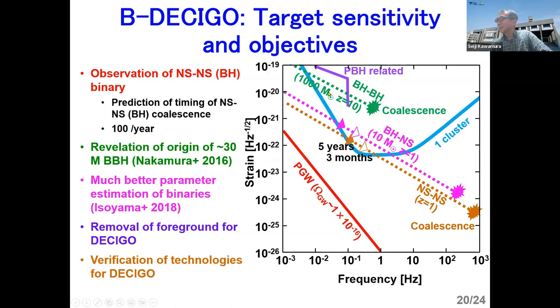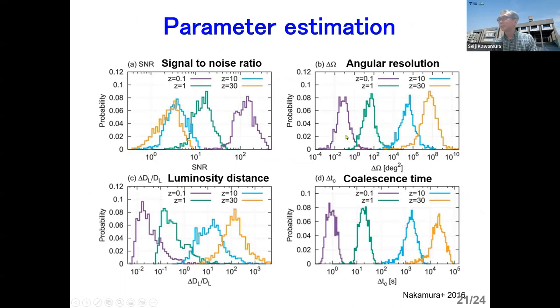So B-DECIGO target sensitivity is something like this. So of course, we cannot measure the PGW with B-DECIGO. But we can measure a lot of things. So observation of neutron star, neutron star binary, 100 times a year, which is pretty good. And the revelation of origin of 30 solar mass black hole binary. And much better parameter estimation of binaries. And also for technologies, removal of foreground for DECIGO can be tried. And verification of technologies for DECIGO can be verified with B-DECIGO. And for example, for parameter estimation, the B-DECIGO angular resolution is pretty good. Like 10 to the minus 1 square degree for z of 0.1 target, which is pretty good.